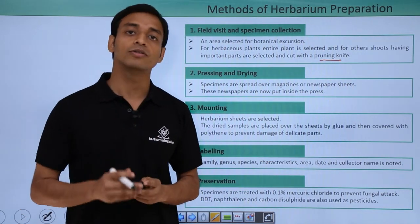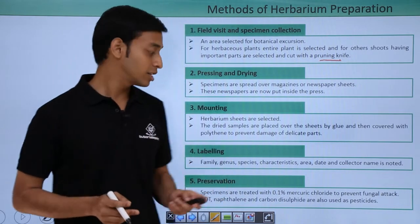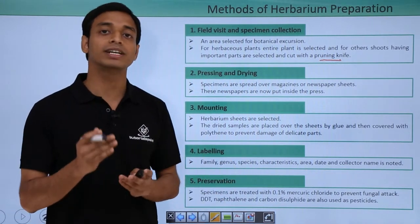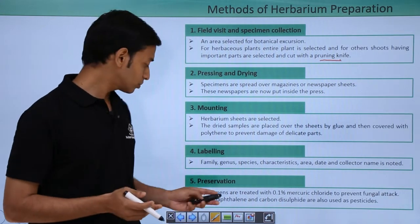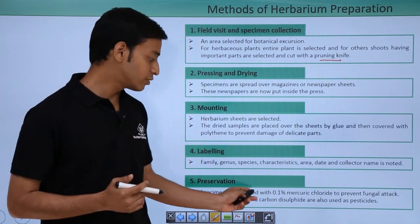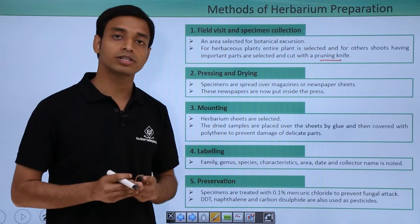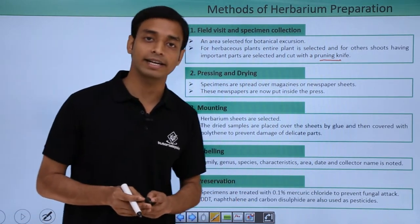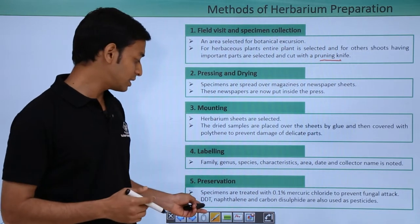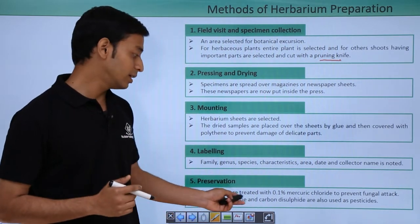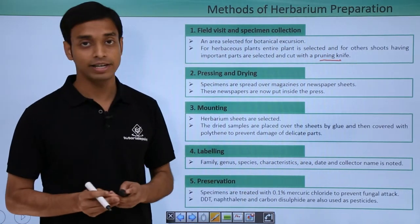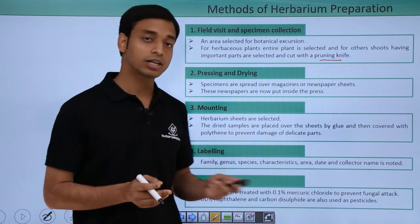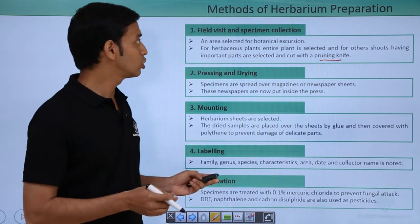The last step is preservation, which is very important to prevent damage or decay. The specimens are treated with 0.1% mercury chloride to help prevent fungal attack. The samples are also treated with DDT, naphthalene, and carbon disulfide, which act as pesticides to prevent insect damage.